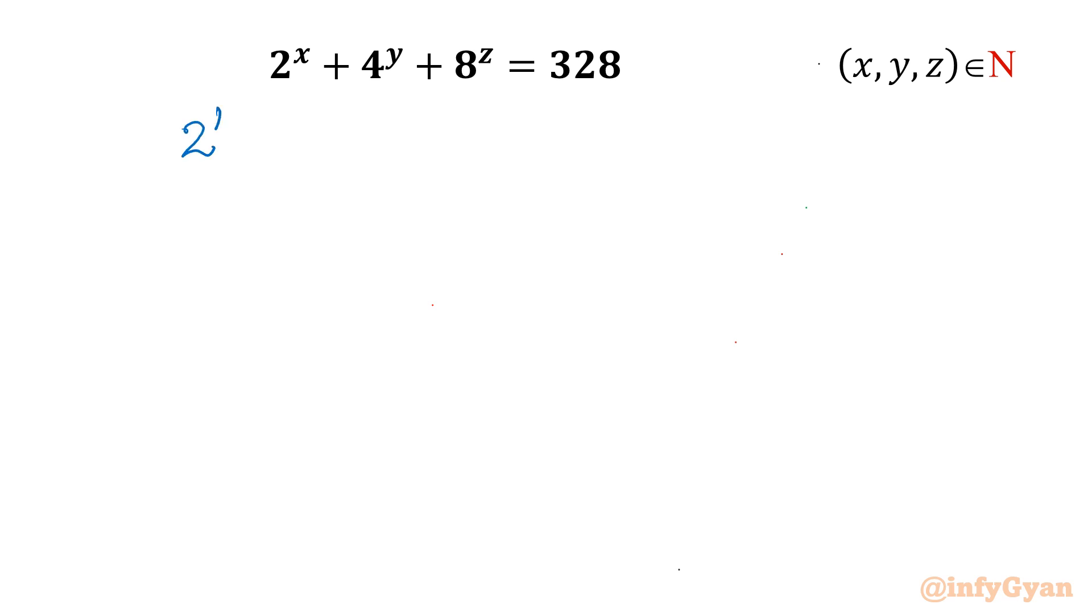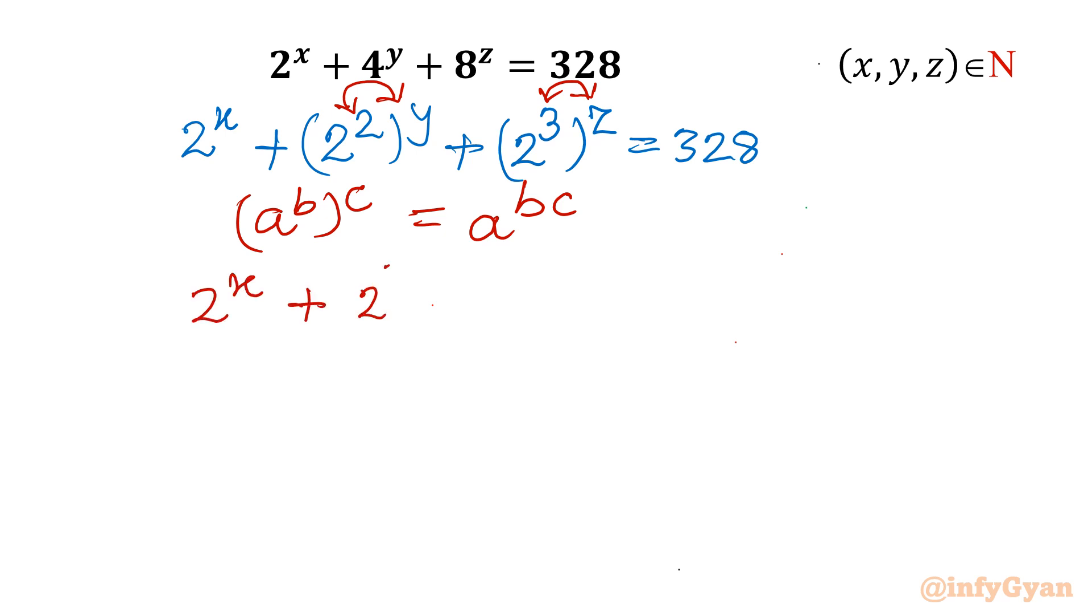I will consider 2^x plus 4, I will consider 2^2 whole power y, and 8 we can write as 2^3 whole power z equal to 328. Now I will use one identity exponential property which states that (a^b)^c then we can consider the product in the powers a^bc. So here we will multiply these two powers and similarly here also we will take up multiplication in the powers. So what we will write: 2^x + 2^(2y) + 2^(3z) = 328.